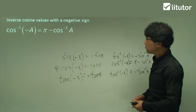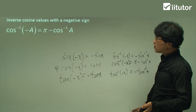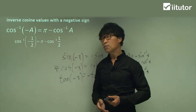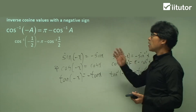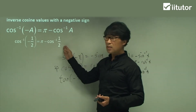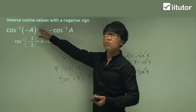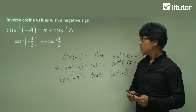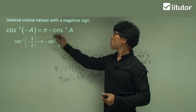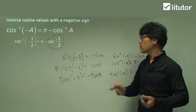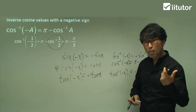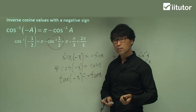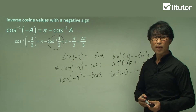Let's go ahead with an example. We're going to substitute negative one-half. That is not positive cos⁻¹(x); due to the rule, we follow π minus cos⁻¹(1/2). What is the value of cos⁻¹(1/2)? You should remember this: it will be π/3. Then, calculating it, we get 2π/3. As simple as that.